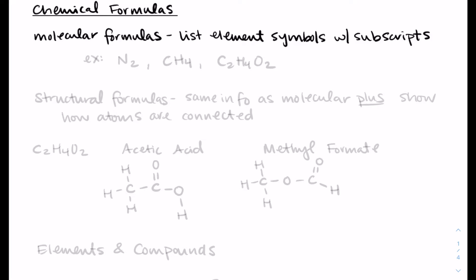So for N2, which was our example before, there are two nitrogens. CH4 is a molecular formula for a compound that has one carbon and four hydrogens. And C2H4O2 has two carbons, four hydrogens, and two oxygens in that molecule.